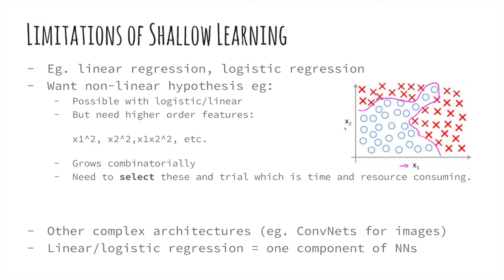Generally, we want to use neural networks for non-linear hypotheses. Consider the diagram presented. The optimal hypothesis function is curvy and clearly not linear. But you may be asking, we can achieve non-linear functions in logistic and linear regression. We simply insert polynomial terms like x1 squared, x2 squared, x1 x2 squared, etc.